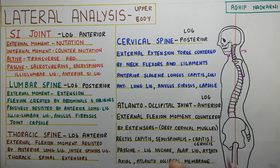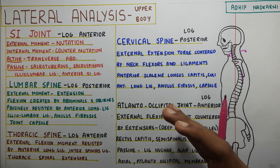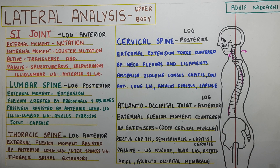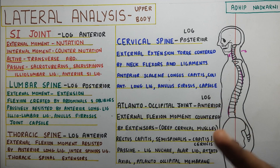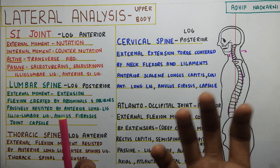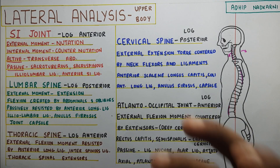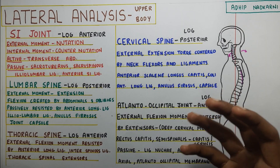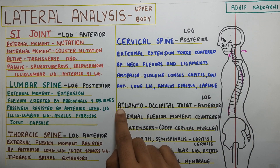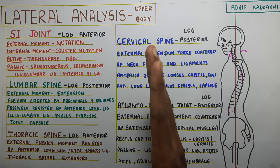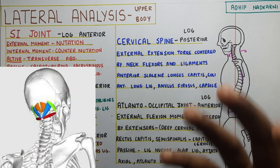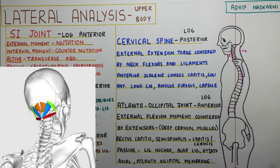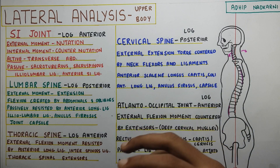Finally, coming to the atlanto-occipital joint, which is pretty complex because there are tons of ligaments here. I suggest you watch my video on this — I'll link it — where you'll get a way better idea of the passive structures present and how they act. Passively, there are the ligamentum nuchae, alar ligament, and the atlantoaxial and atlanto-occipital membrane. I talk about each bone and how the ligaments connect from atlas to axis and their function. The line of gravity goes anteriorly at the atlanto-occipital joint, so gravity pulls your head into flexion. You therefore need the extensors — cervicis capitis, semispinalis capitis and cervicis — the deep muscles that create extension at your head.